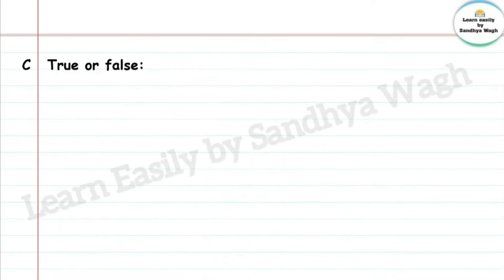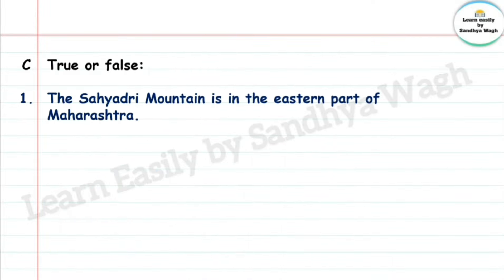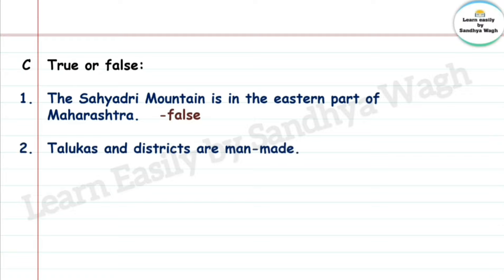True or False: 1. The Sahyadri mountain is in the eastern part of Maharashtra. Answer: False. The Sahyadri mountains are in the western part of Maharashtra, not the eastern part. So the sentence is false.